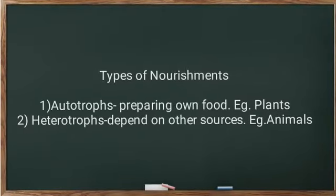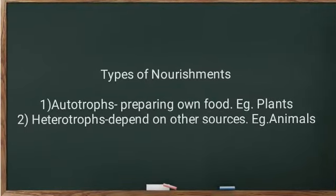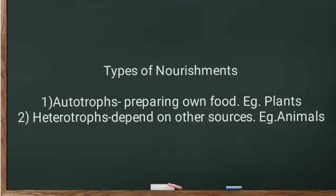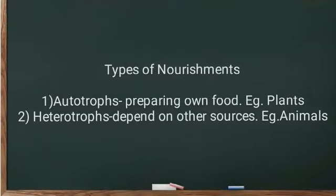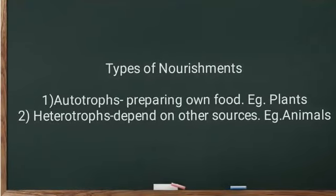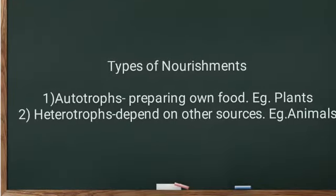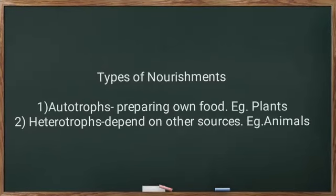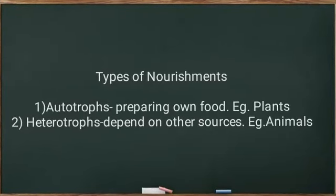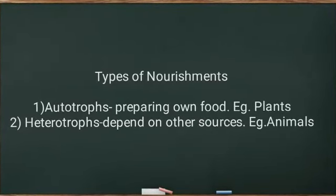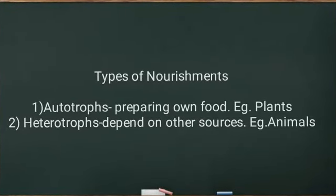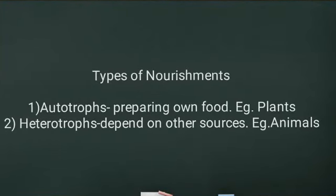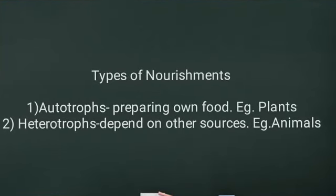There are two types of nourishments. One is autotroph, and the second one is heterotrophs. Autotrophs means they prepare their own food — example, plants. Heterotrophs means they depend upon other sources — example, animals.